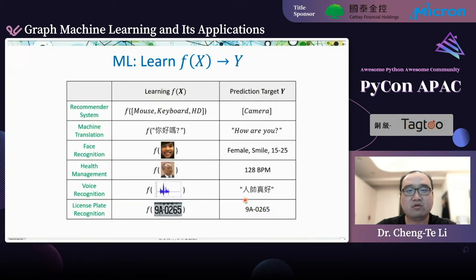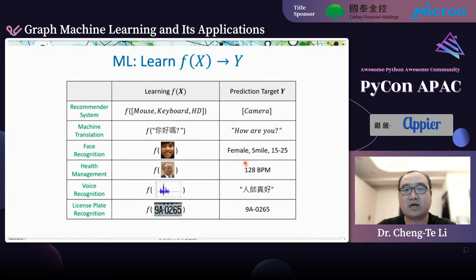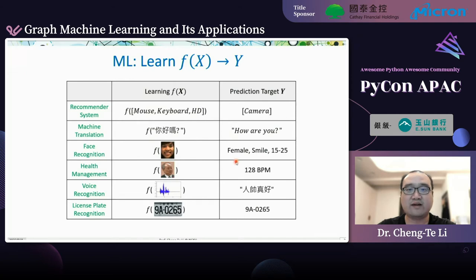We can cast many real-world data science applications into supervised learning. For example, in recommender systems, we input a user's recent browsing history and predict which item they would like next. In machine translation, we input text in one language and predict text in another. In computer vision and other domains, we specify different input data formats and prediction targets, and the function f is trained to produce the corresponding results.